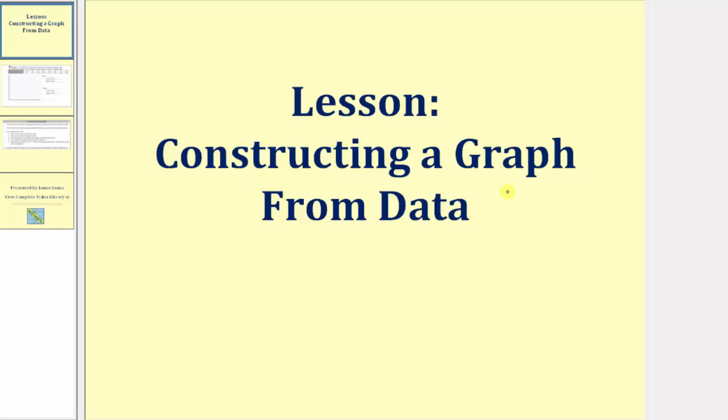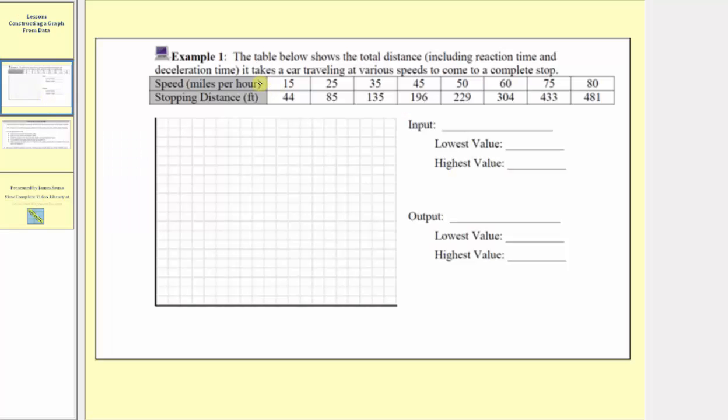Welcome to a lesson on constructing a graph from data. The table below shows the total distance, including the reaction time and deceleration time, it takes a car traveling at various speeds to come to a complete stop. In the first row we have the speed in miles per hour. In the second row we have the stopping distance in feet.